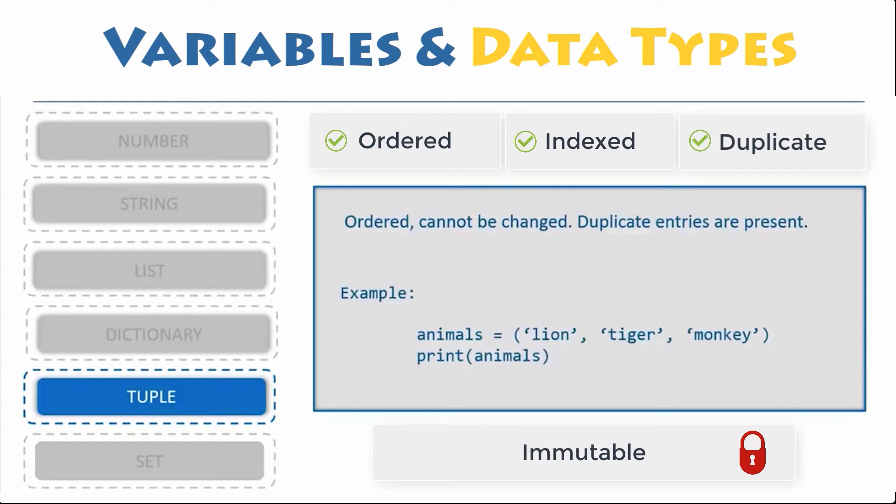In Python, tuples are represented by tuple class and created by placing sequence of values separated by comma with or without the use of parentheses for grouping of data.